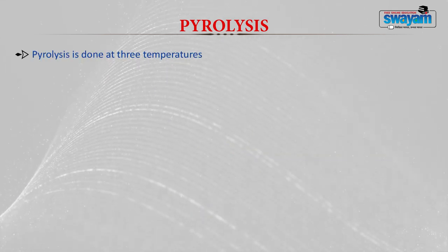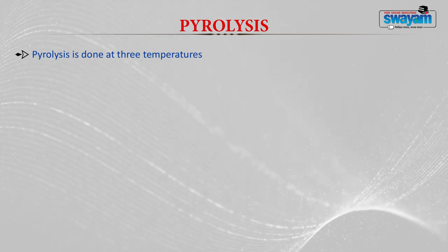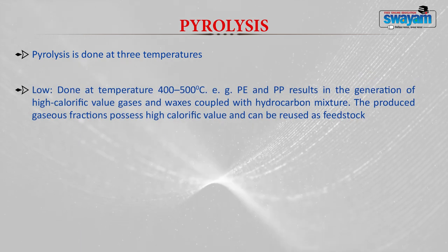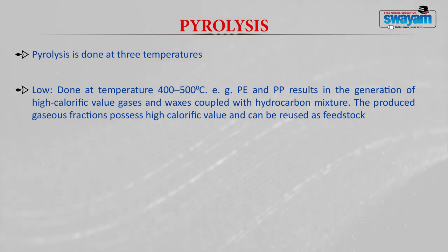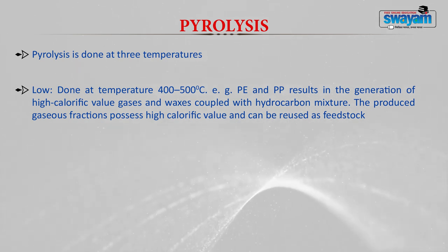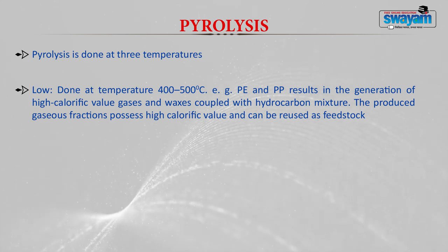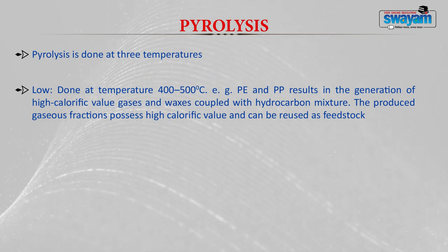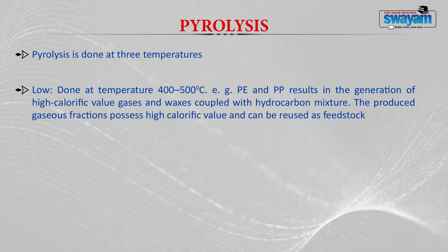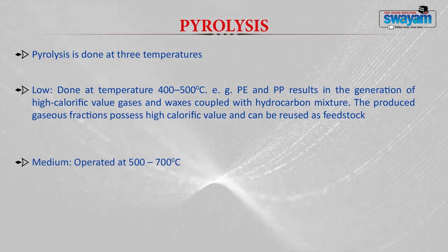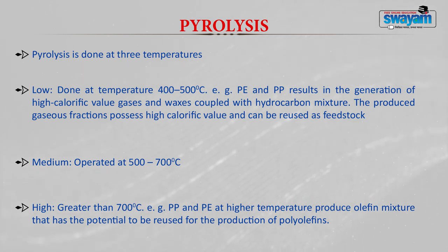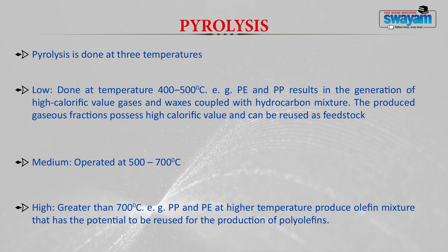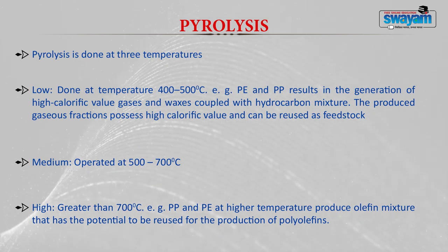Pyrolysis is done at a range of temperatures, categorized into three types: low, medium, and high. Low temperature pyrolysis is done at 400 to 500 degrees Celsius — polyethylene and polypropylene result in generation of high calorific value gases and waxes, along with hydrocarbons. The produced gaseous fractions have very high calorific value and can be used as a feedstock. Medium temperature pyrolysis is operated between 500 to 700 degrees Celsius. High temperature pyrolysis is operated at greater than 700 degrees Celsius — polypropylene and polyethylene at very high temperature produce olefins, which have the potential to be reused for production of polyolefins.